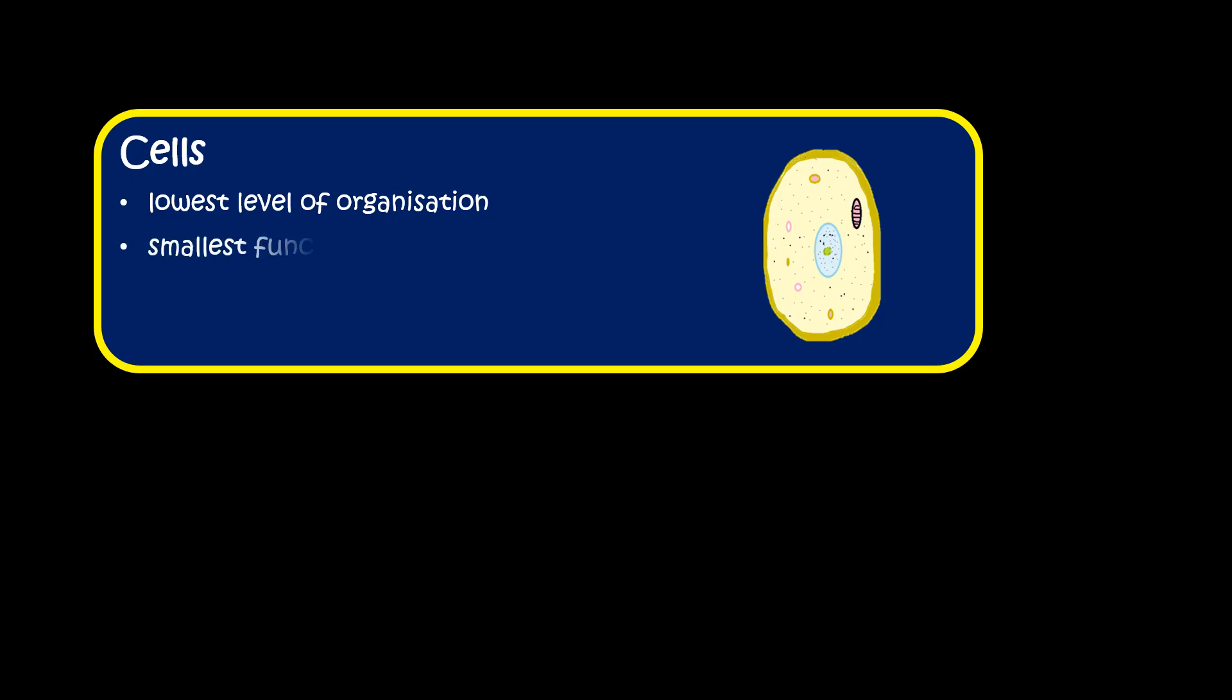Cells form the lowest level of organization. They are the smallest functional units of an organism. Cells are of different types, as they perform different functions.